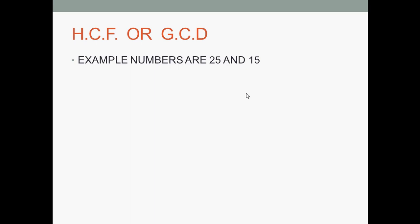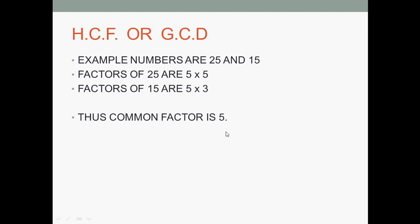For example, with 25 and 15, we need to find the biggest number that can divide both. Both can be divided by 1 or both can be divided by 5, and 5 is the bigger one, so 5 is the HCF. To find this, you can write 25 factors: 5 into 5 is 25. Then write 15 factors: 3 into 5 gives 15. The common factor is 5 and 5, so the common factor is 5. This is why HCF will be 5.